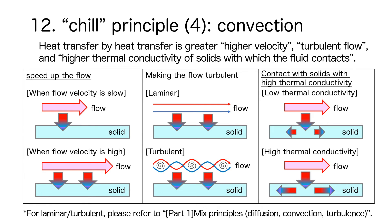Heat transfer by convection increases with higher flow velocity, turbulent flow, and higher thermal conductivity of solids with which the fluid contacts. In other words, using a shaker made of a material with high thermal conductivity to generate fast-flowing forced convection, including turbulence, is the key to cooling cocktail ingredients by convection.